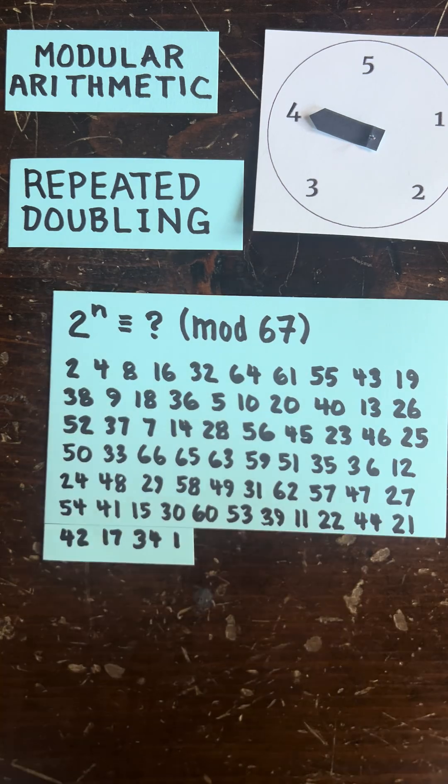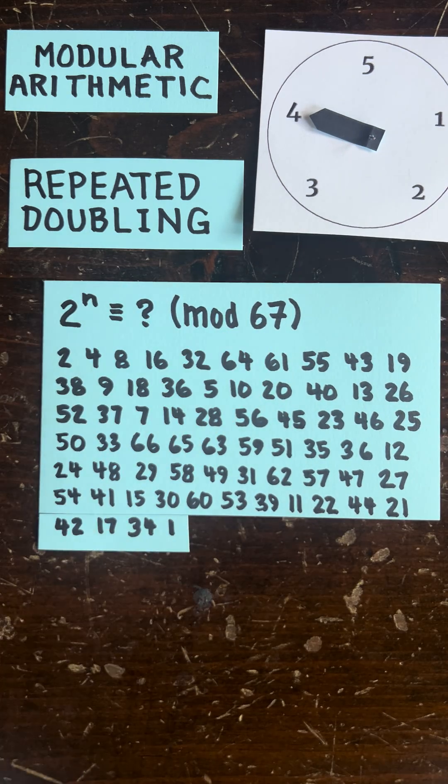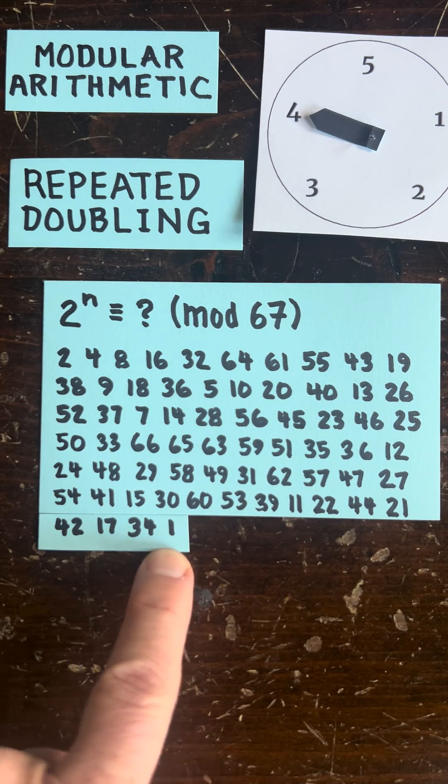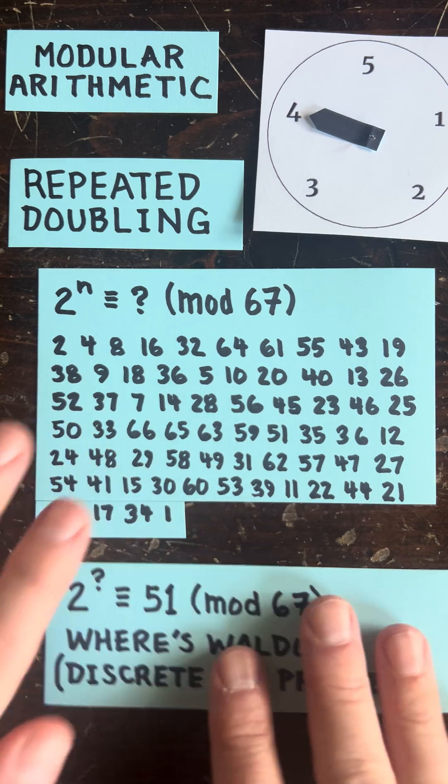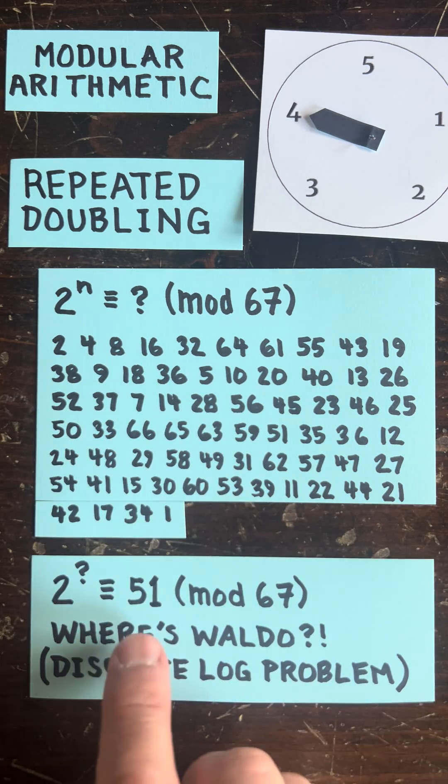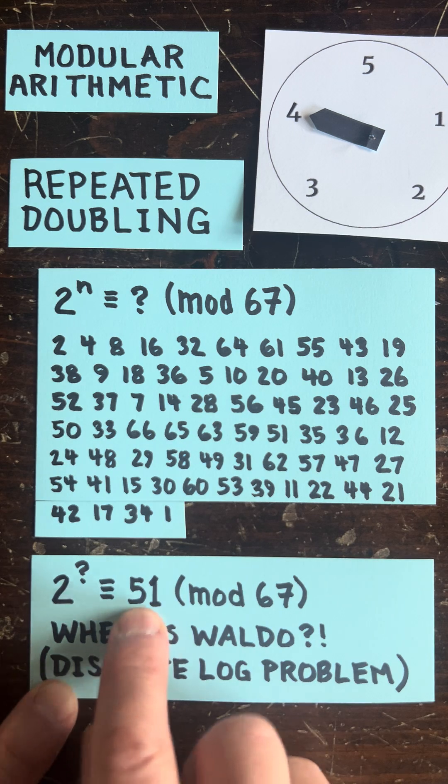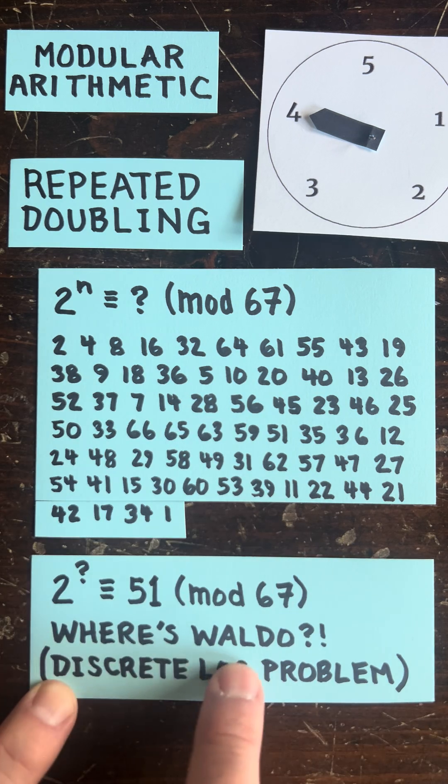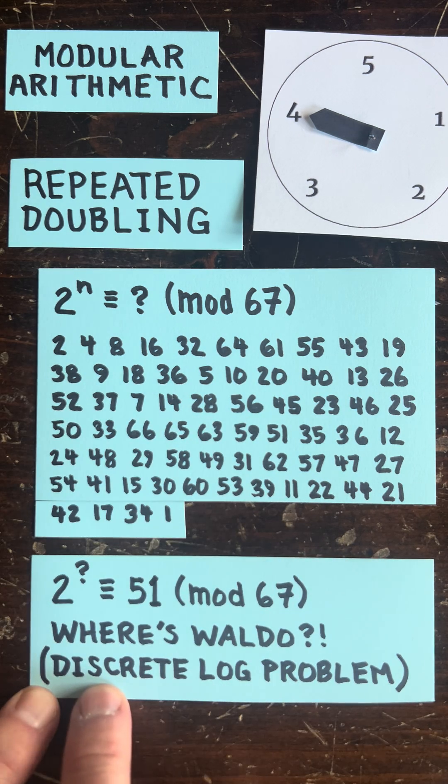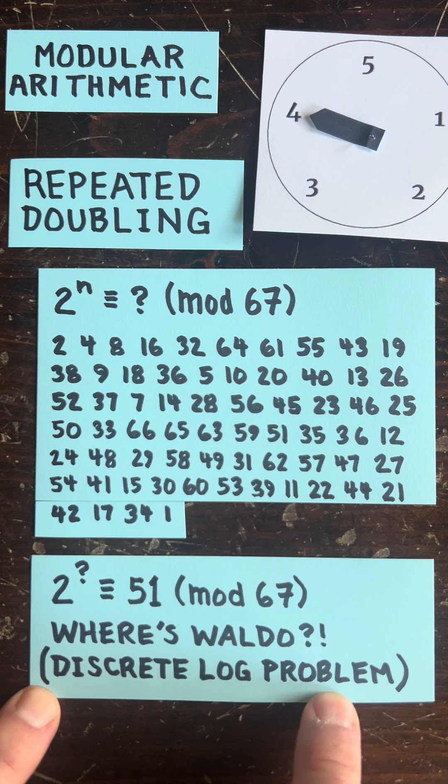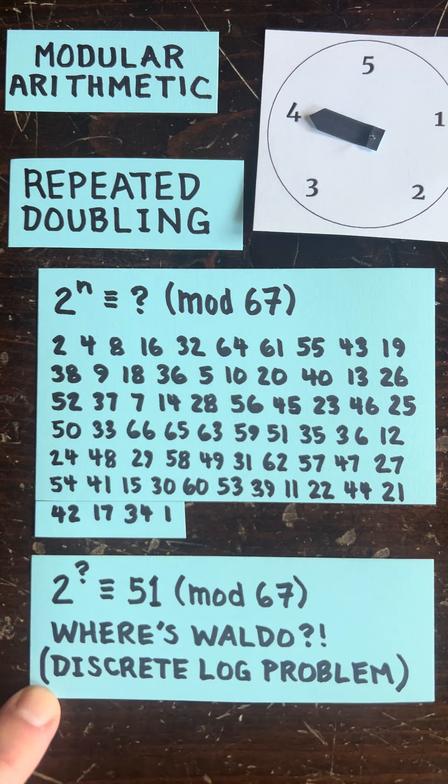So for example, you can see on this 67-hour clock, after 66 doublings, we get to 1 here. Now, these numbers in the middle, though, are really crazy. And for example, if the number of the clock is very huge, it's really hard to find something like 51 in there somewhere. And this is so difficult, it's called the discrete log problem. And solving it is kind of the basis of a lot of internet security.